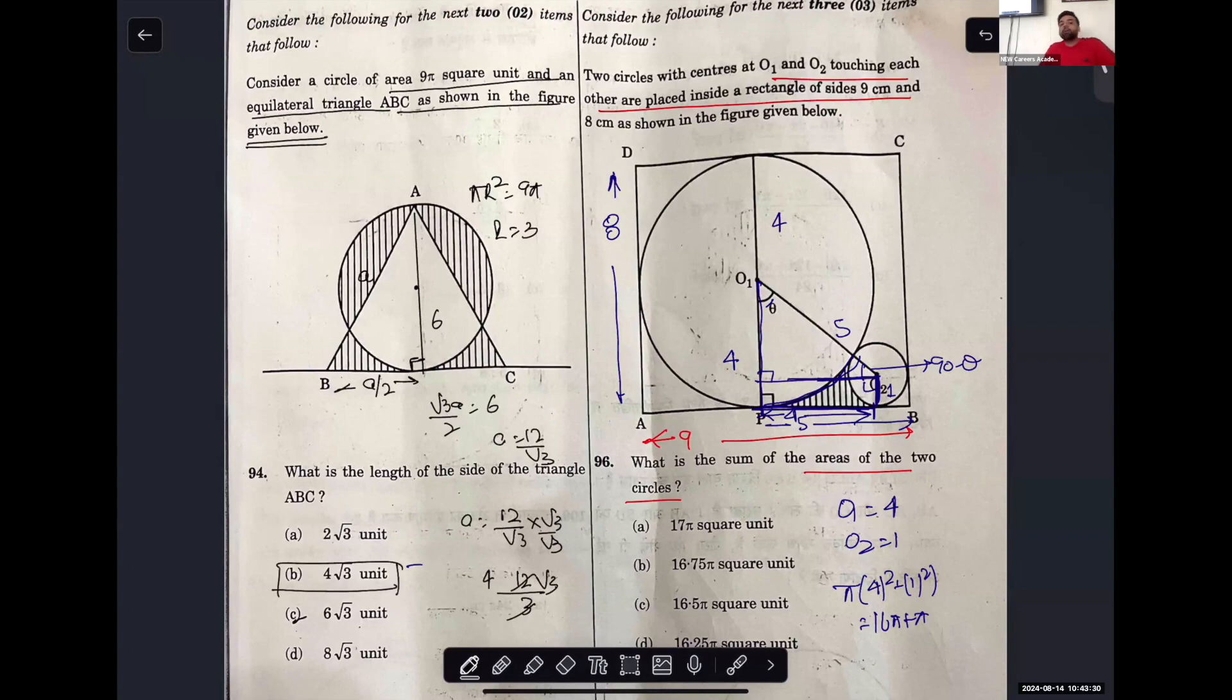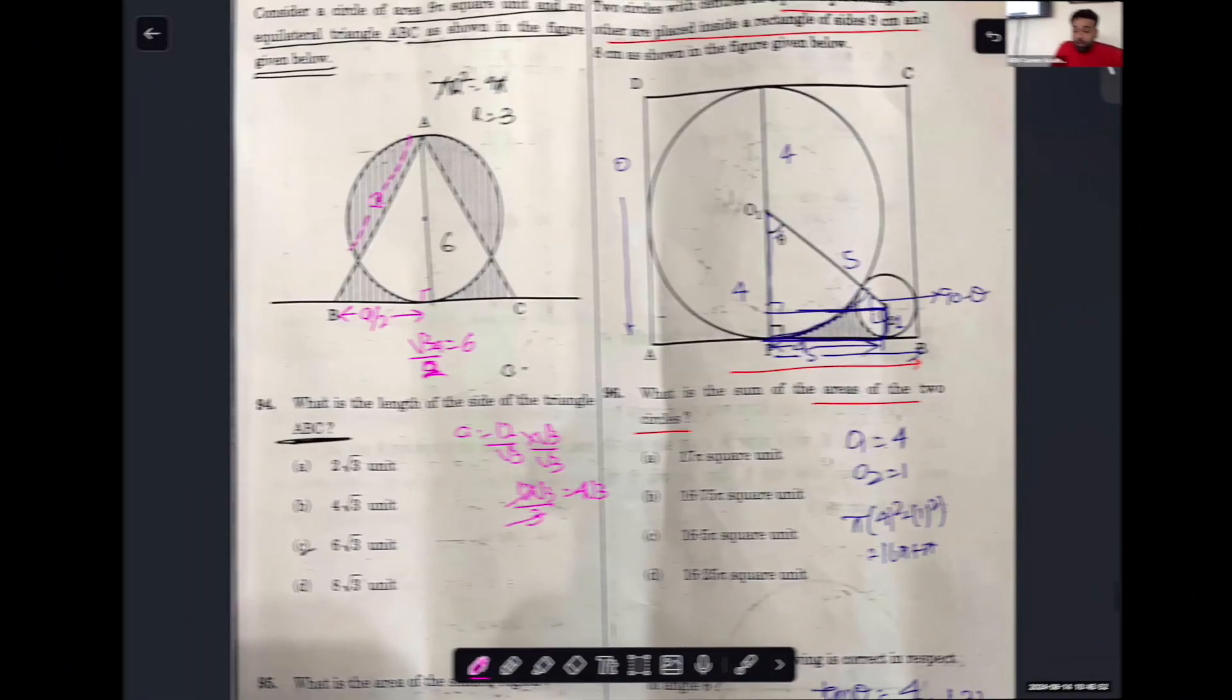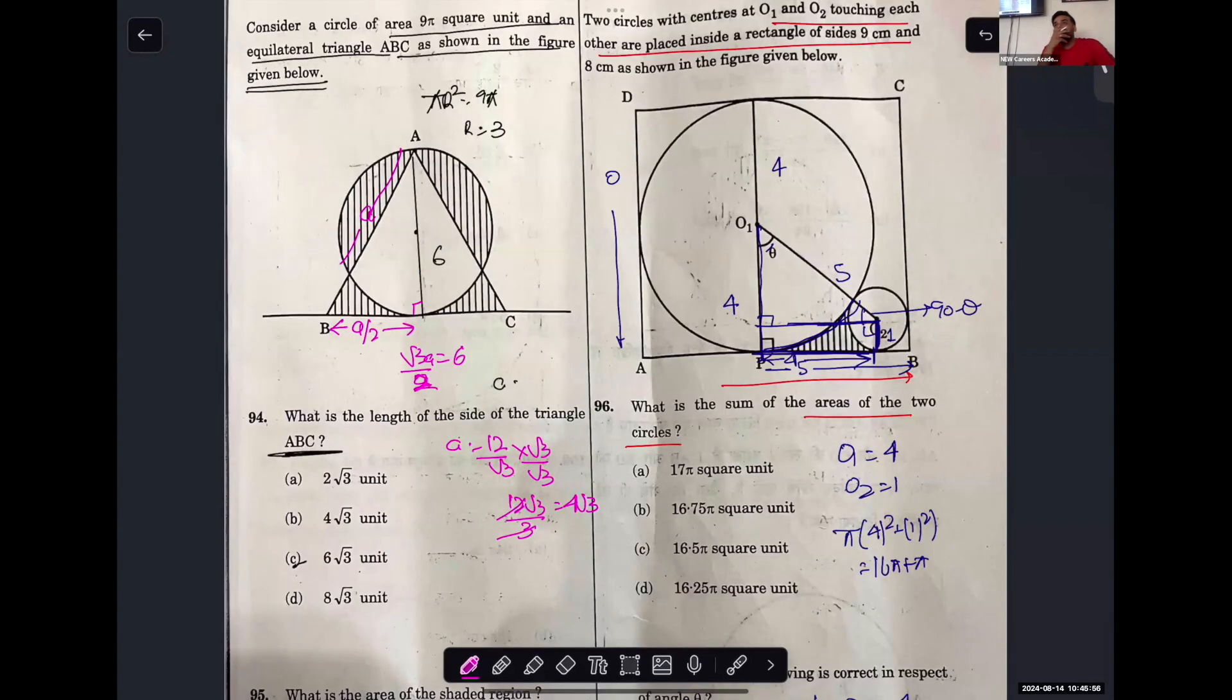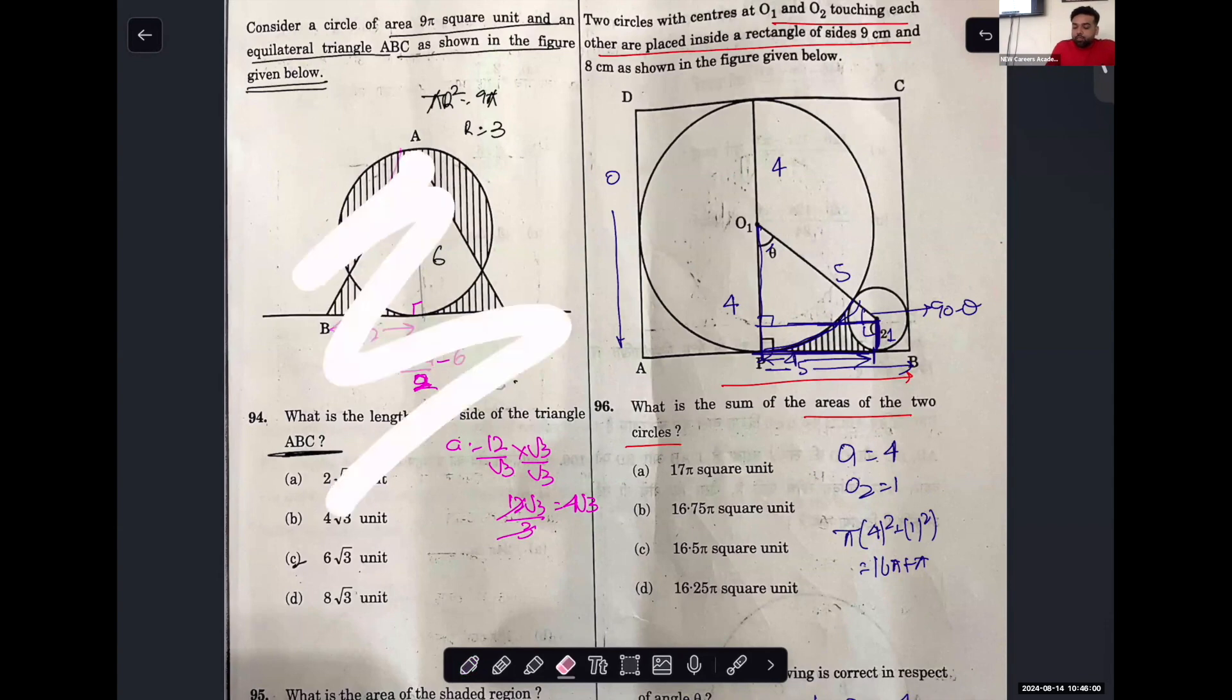As I said, this is not coming. Now he says area of the shaded region. This is where of course it's going to get a bit long. What we'll have to do is, what will we do first? If I draw it.